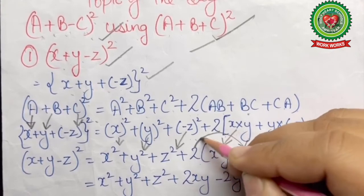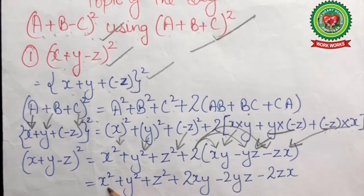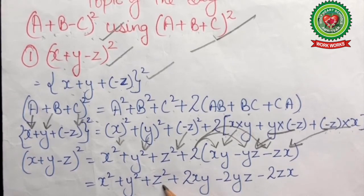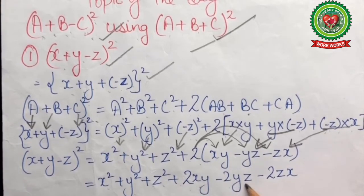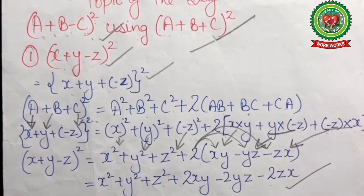On multiplying 2 with all the terms inside the bracket, we get our final answer: x²+y²+z²+2xy-2yz-2zx.